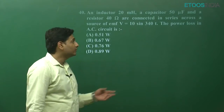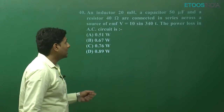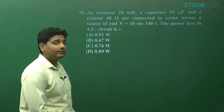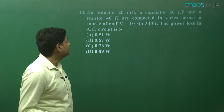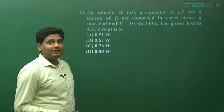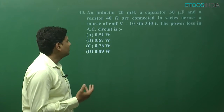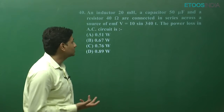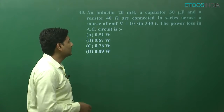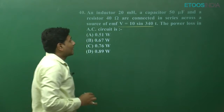Moving on to question number 40. An inductor, capacitor, and resistor are all connected in series across a source. There is a source with an equation given here — the EMF equation.